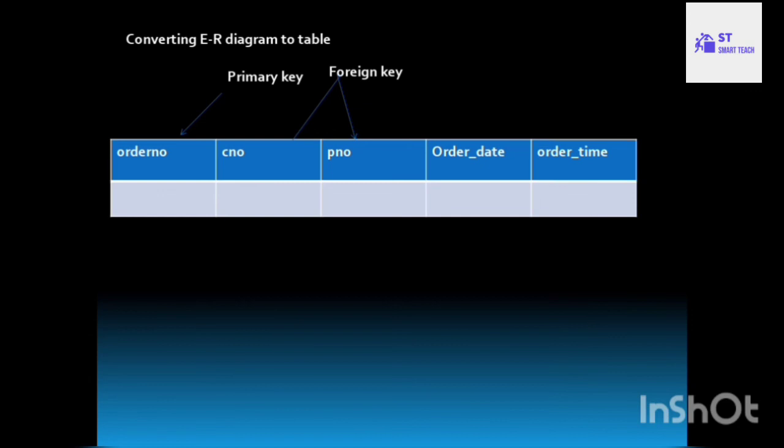An ER diagram is developed using entities, attributes, and relationships — specifically strong entities, weak entities, and associative entities. Using these steps, we can easily convert an ER diagram into tables. If you found this helpful, please like and subscribe. Thank you for watching.